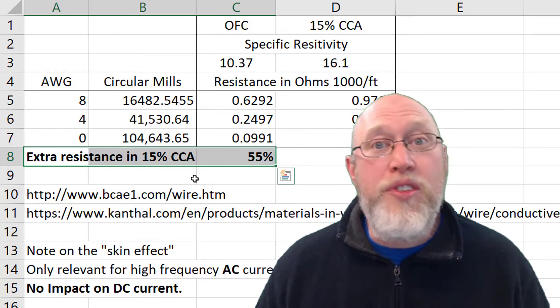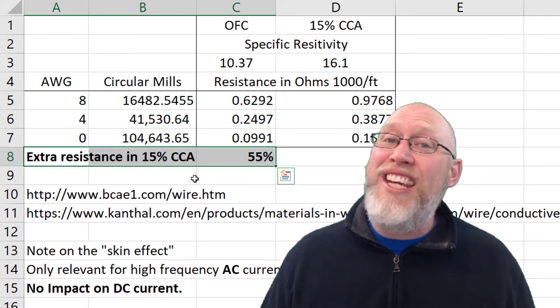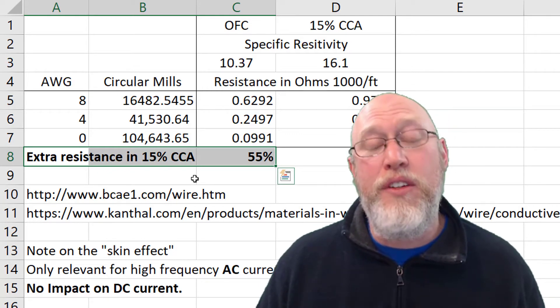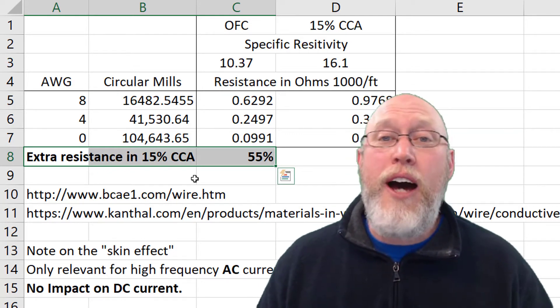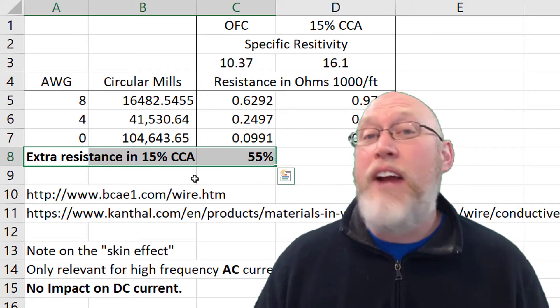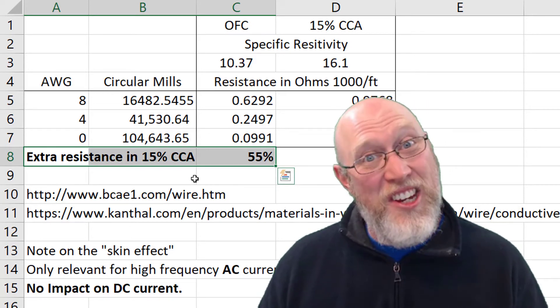So why in the world do people use CCA at all? Well, because CCA is a lot less expensive than oxygen-free copper. Copper is a very expensive metal, and for good reason, because it's really good stuff.